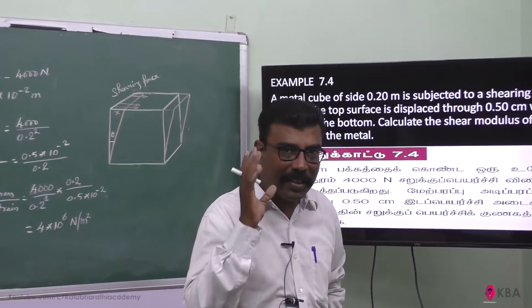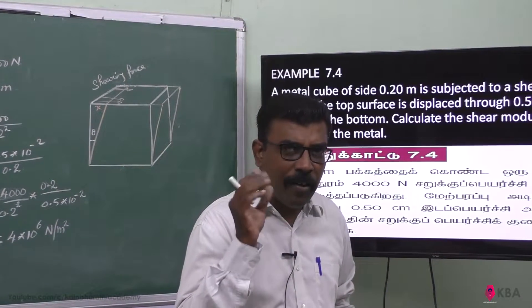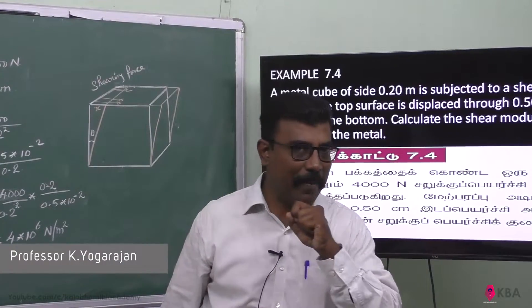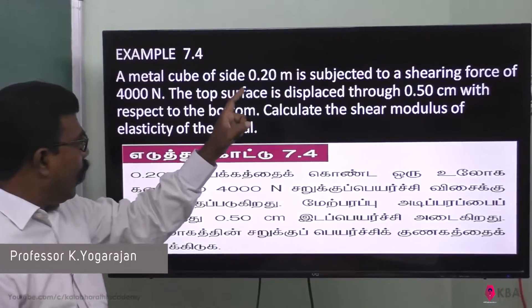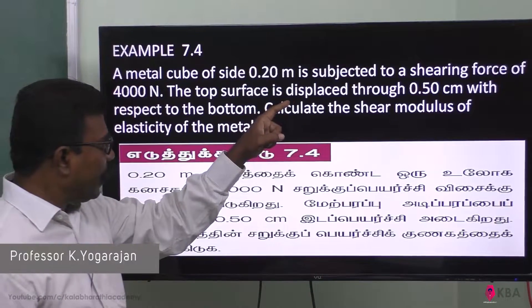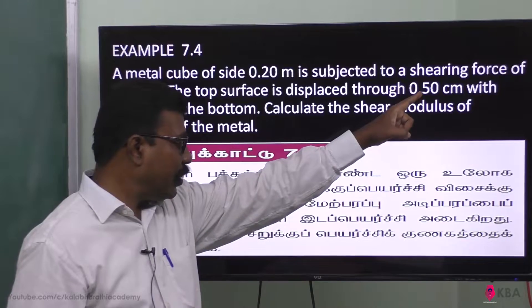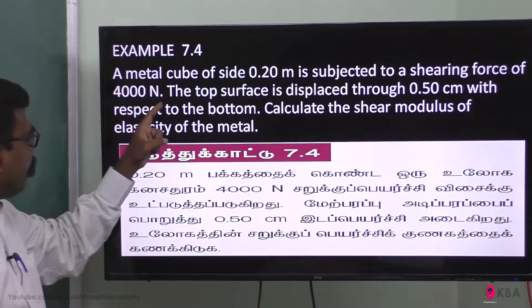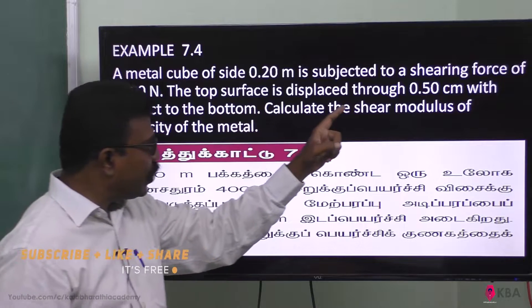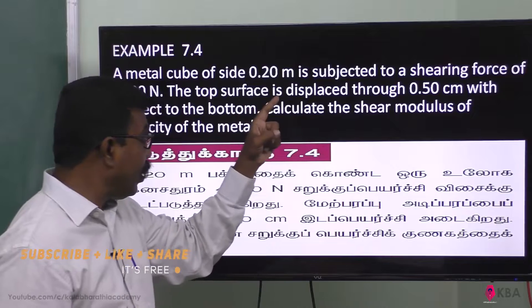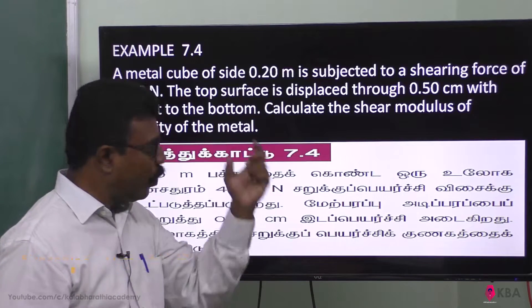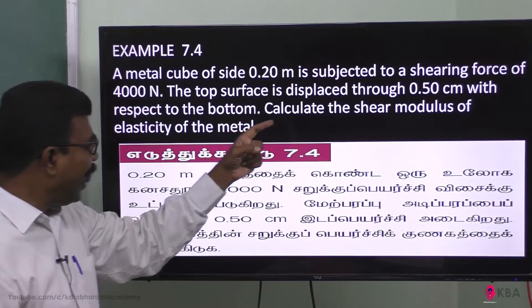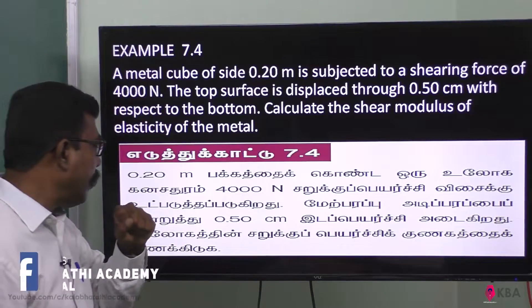This is one basic problem — it is very simple also. A metal cube of size 0.2 meter is subjected to a shearing force of 4000 Newton. The top surface is displaced through 0.5 centimeter with respect to the bottom. Calculate the shear modulus of elasticity of the metal.